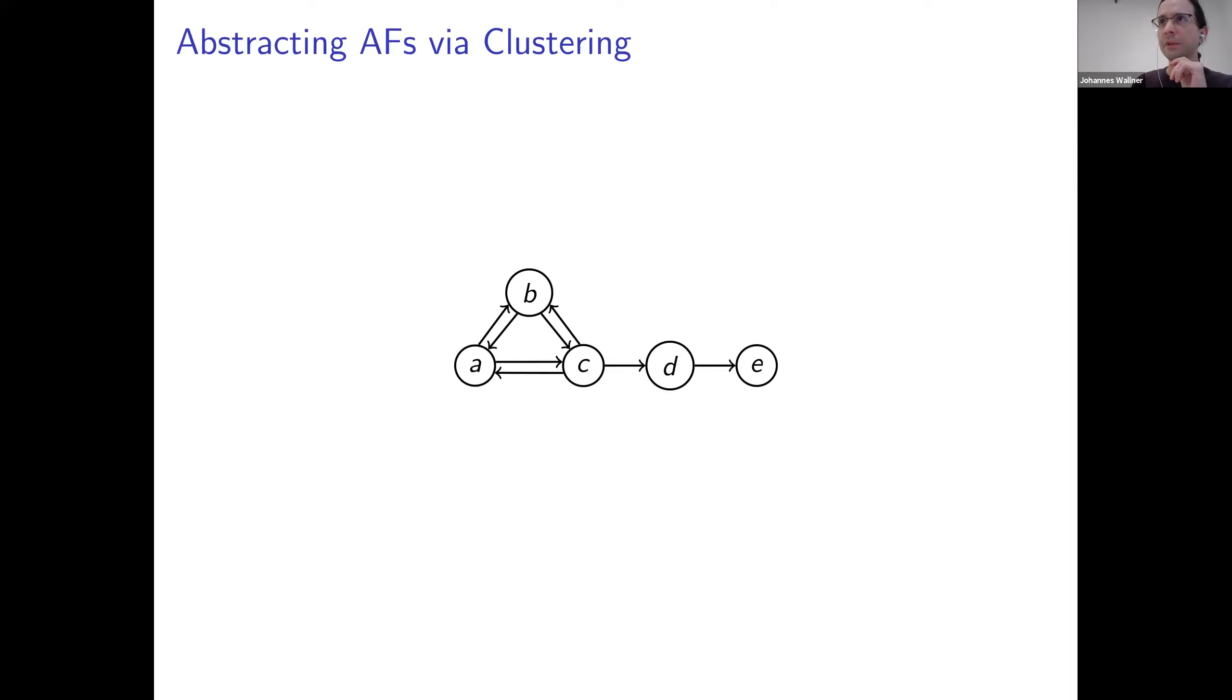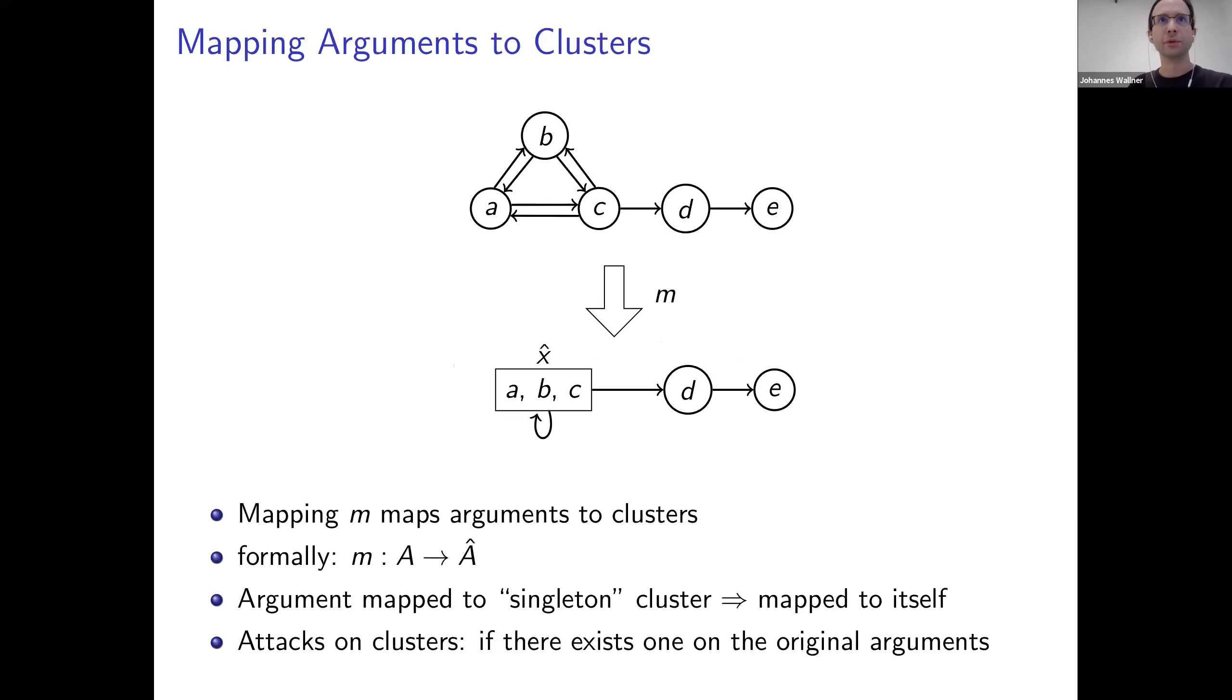So for most of the talk, I will walk us through the main concepts via examples. Let's go back to a simple argumentation framework here on the top. Now one convenient way of actually clustering arguments is via a mapping here on the bottom, which maps arguments into clusters. Here in the example, for instance, the three arguments on the left, they are clustered or mapped into this cluster head X. Head X contains the three arguments ABC. And the arguments D and E, they are mapped into clusters just containing themselves. We call them singleton clusters because there's just one argument inside them.